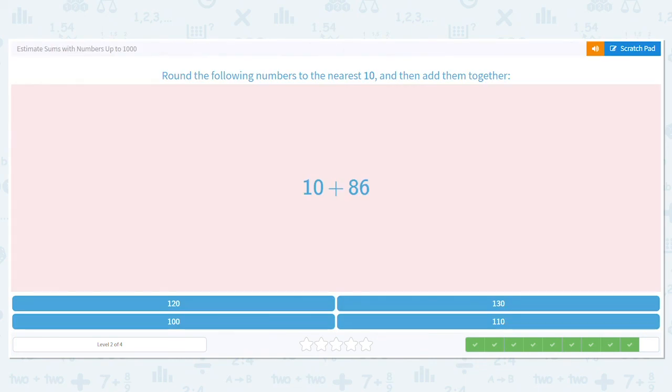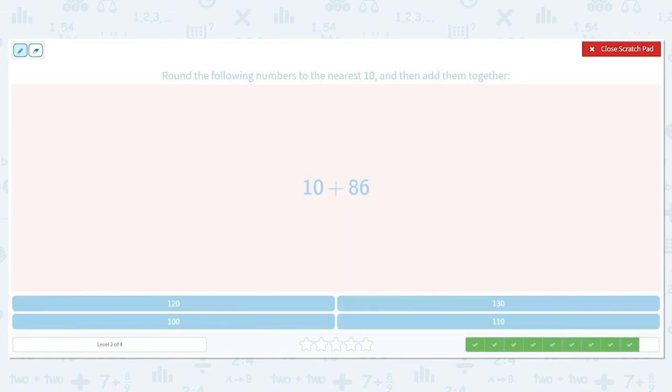One more. Let's round 10 plus 86. What do we know about 10? 10 is already a multiple of 10, so we leave it alone. How about 86? Does 86 round down to 80 or up to 90? It's closer to 90, so there we go. So what is 10 plus 90, or backwards, 90 plus 10? It is 100. So my estimate is 100.